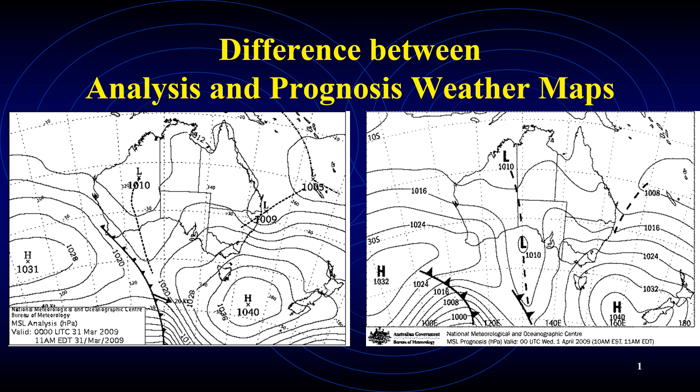This is a short video showing the difference between the analysis charts and prognosis charts that we get on ships through the radio facsimile, what the difference is, and the different forms of these charts. On the left side is an analysis chart and on the right side is the prognosis chart.